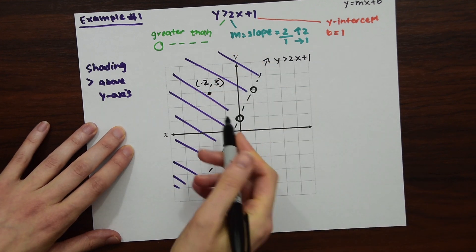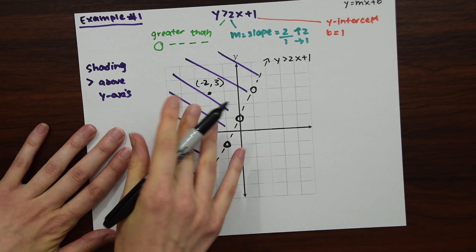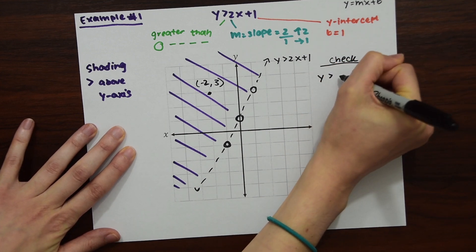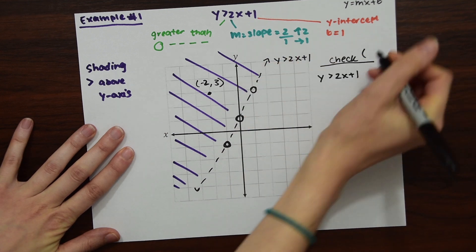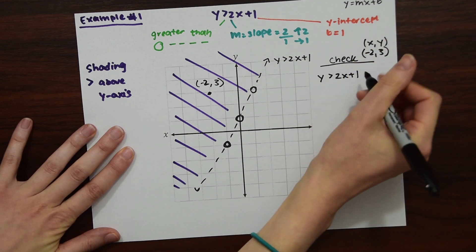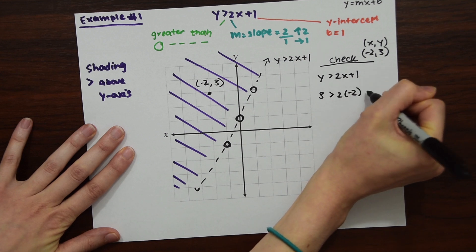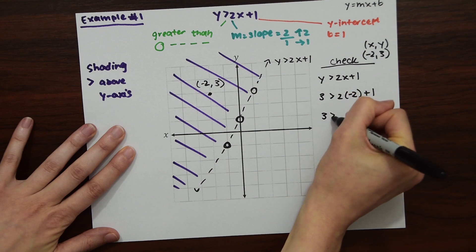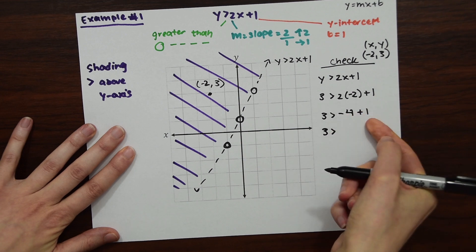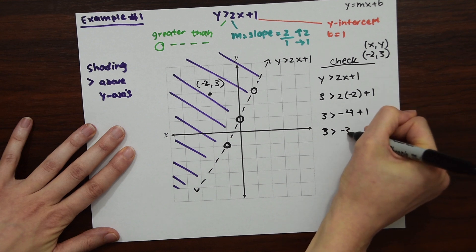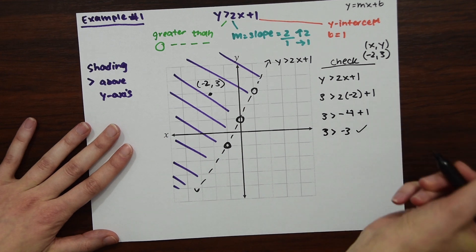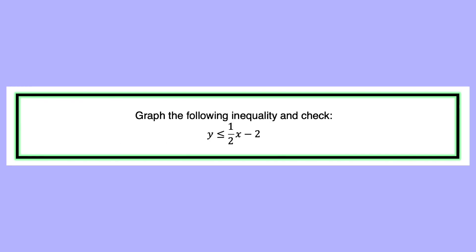To verify, we pick a point in the shaded region — let's choose (-2, 3). We plug into our original inequality: y is greater than 2x plus 1, so 3 is greater than 2 times (-2) plus 1, which gives 3 is greater than -4 plus 1, which is 3 is greater than -3. Yes, that's true, so our solution is correct.